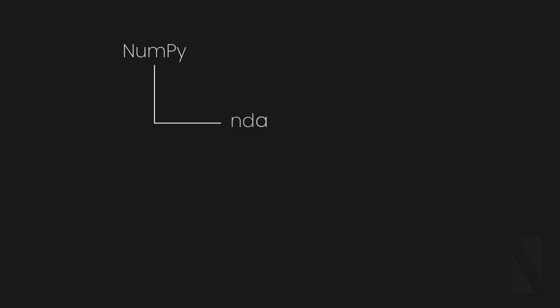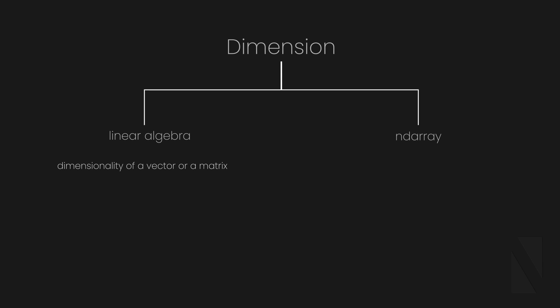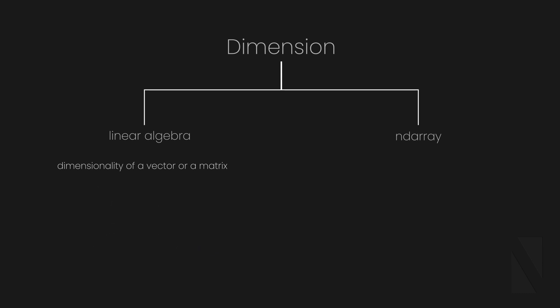Before moving forward with NumPy arrays, it's important to consider a caveat in NumPy. There is a difference in terminologies used in linear algebra and NumPy, and that's about dimensions. In linear algebra, we use the term dimension to express the dimensionality of a vector or matrix — it represents the number of entries in a vector, reflecting the number of axes in the coordinate system. In a matrix, dimensions express the number of elements in rows and columns.